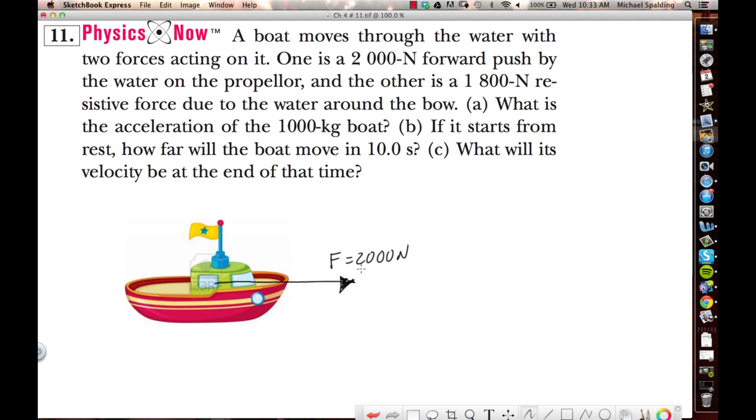But long story short, we have a forward force of 2,000 newtons on the boat. Then it tells us the other force is a 1,800 newton resistive force, which is like a frictional force. So we have a backwards force, lowercase f, 1,800 newtons, like that.